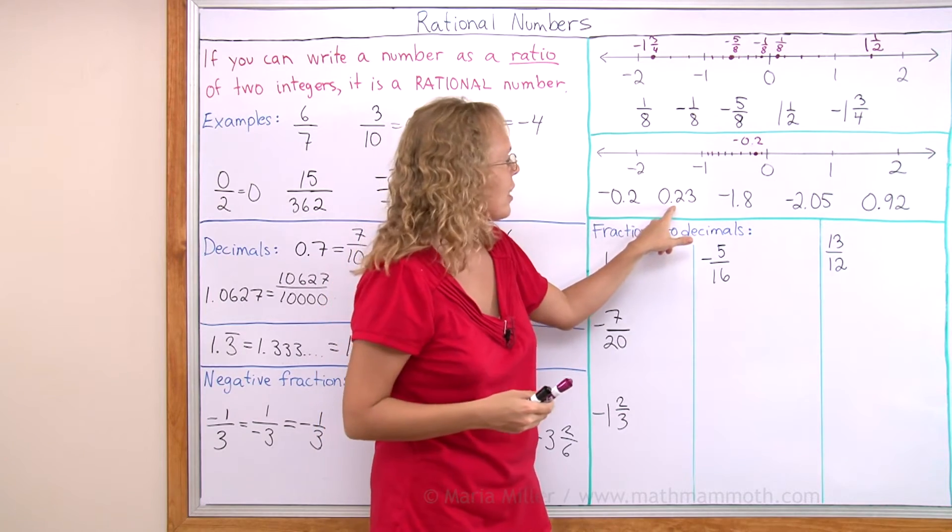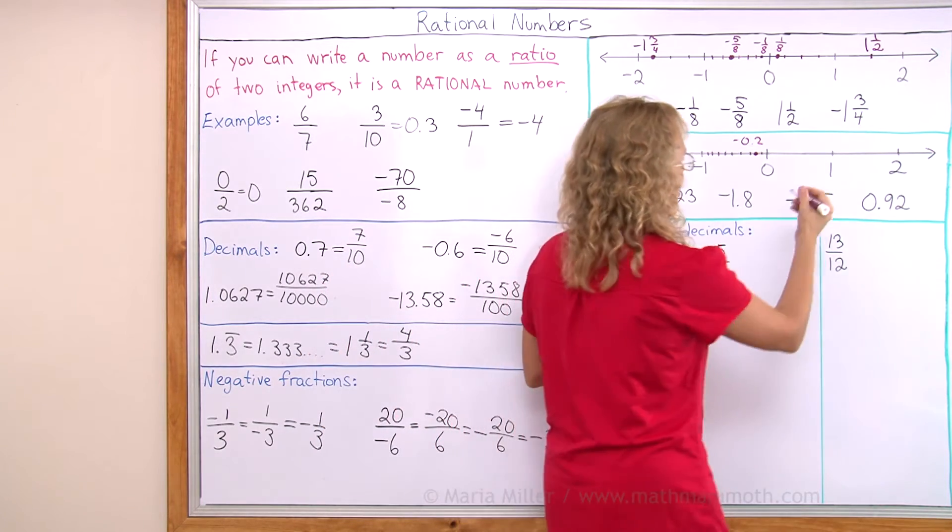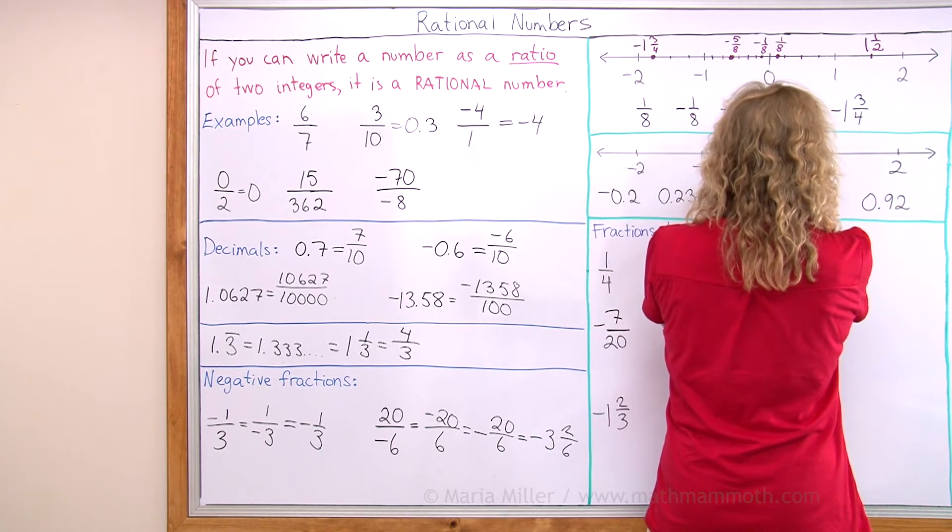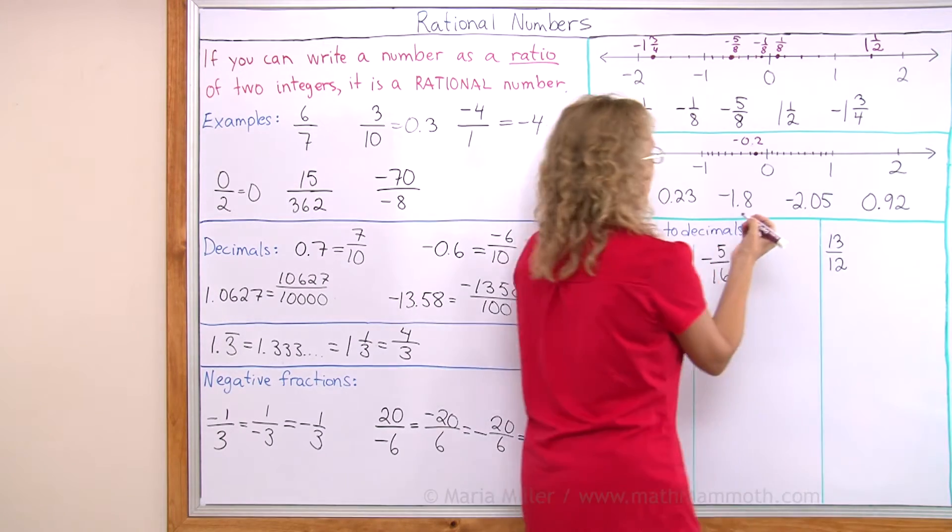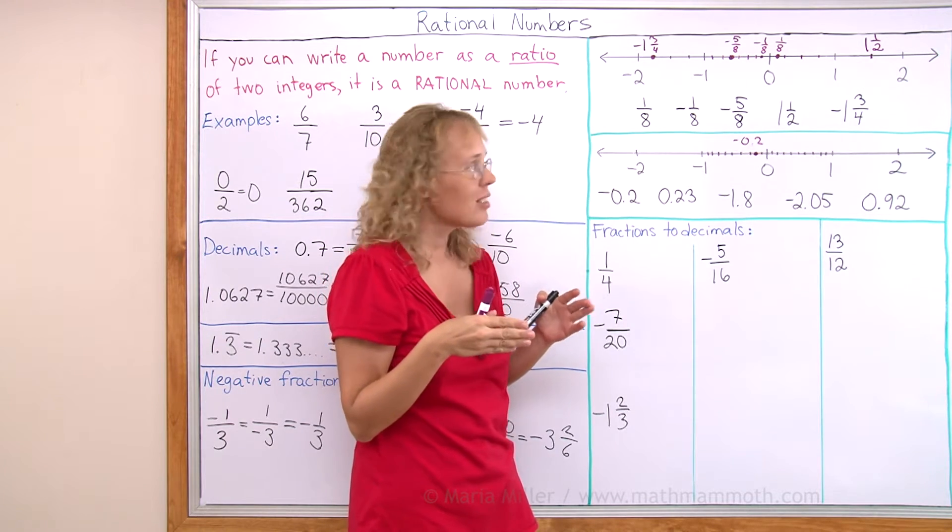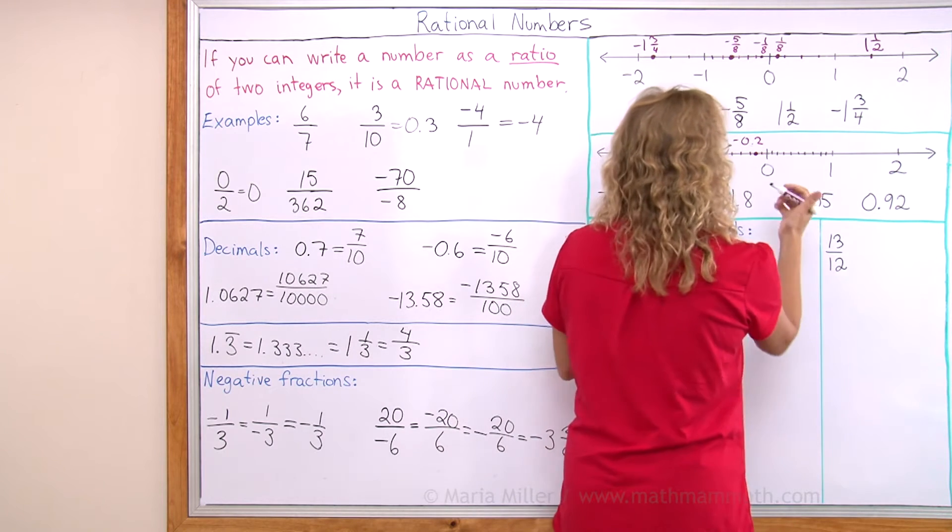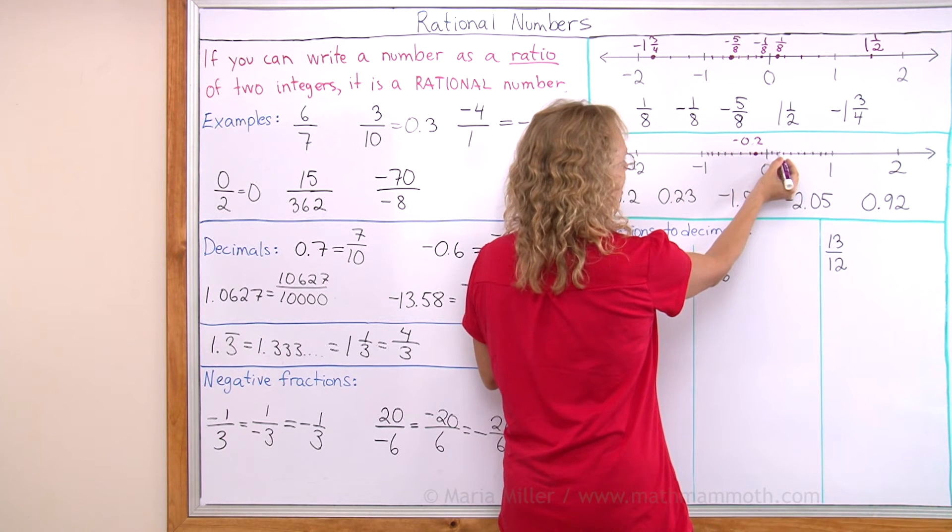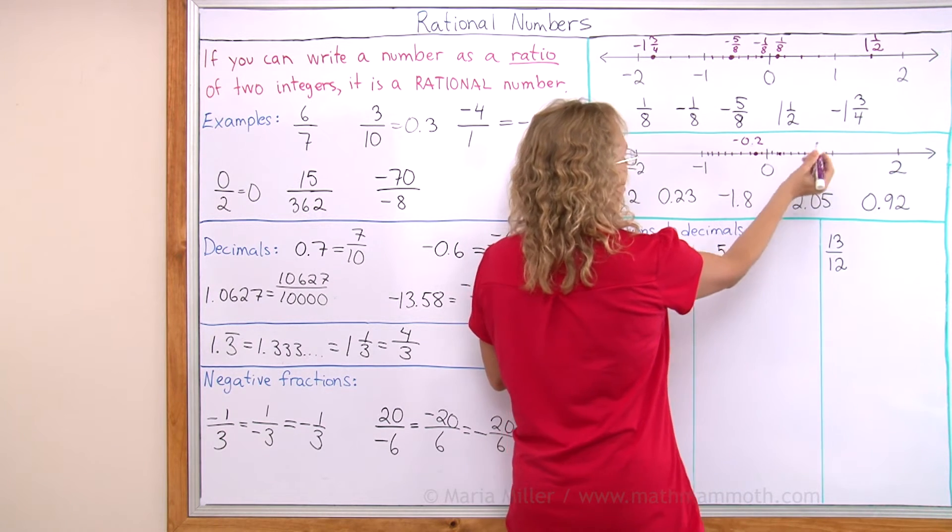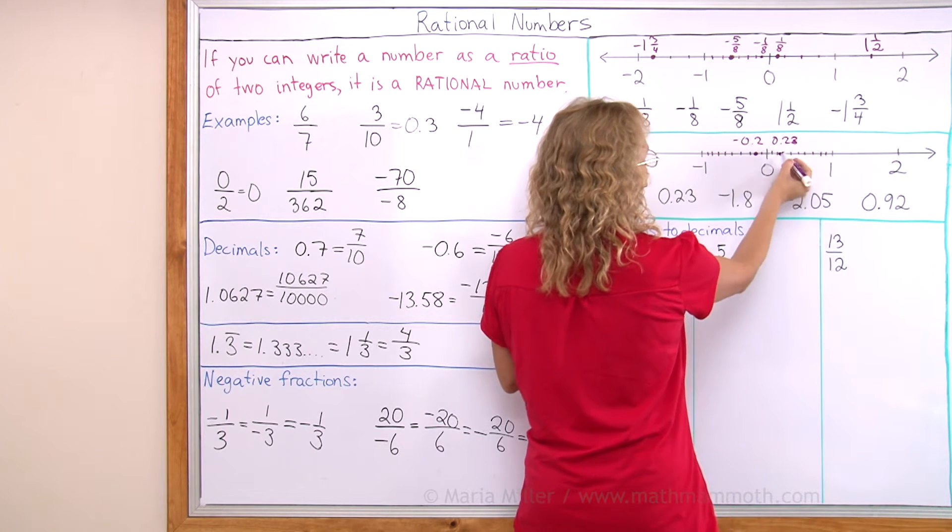0.23, that's a little bit past 2/10 on the number line. So I would have to first divide this into 10 parts. And then, actually to be exact, I would need to divide it into 100 parts and then go to 23/100. But I can't easily do that, so I'll just go to 2/10 here and a little bit further. There would be 23/100.